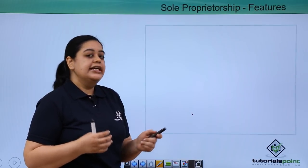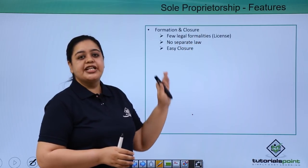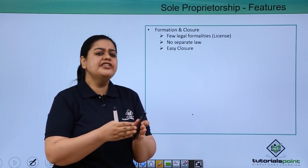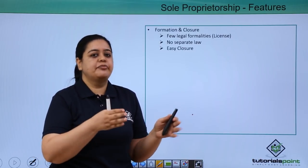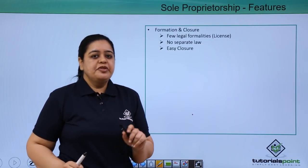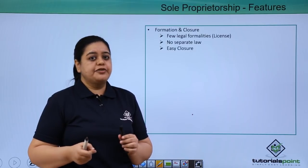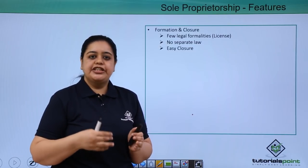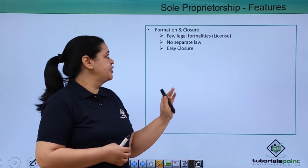Moving further, let's understand the features. The first feature is formation and closure. Forming a sole proprietorship is very easy — you really don't need many legal formalities compared to other forms of organization. For example, in Rama's kitchen, she doesn't need to take registration like a partnership or other forms. However, because she is running a kitchen, there would be certain certifications and licenses she needs to take from the authorities.